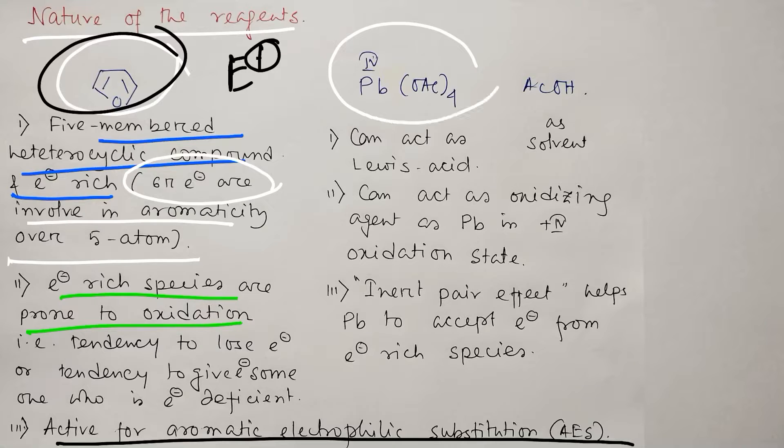In this context, we have taken another reagent like lead tetraacetate. Actually it is a lead 4+ salt. So it can act as a Lewis acid because of higher oxidation state and it can oxidize. It is actually an oxidizing agent as lead 4+ has a tendency to reduce into lead 2+. Question why? This is because of the inert pair effect.